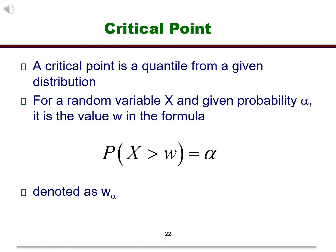A critical point is the quantile from a given distribution. It is the value that solves the probability statement given, or in other words, the value from the distribution that would leave probability alpha to the right of it.